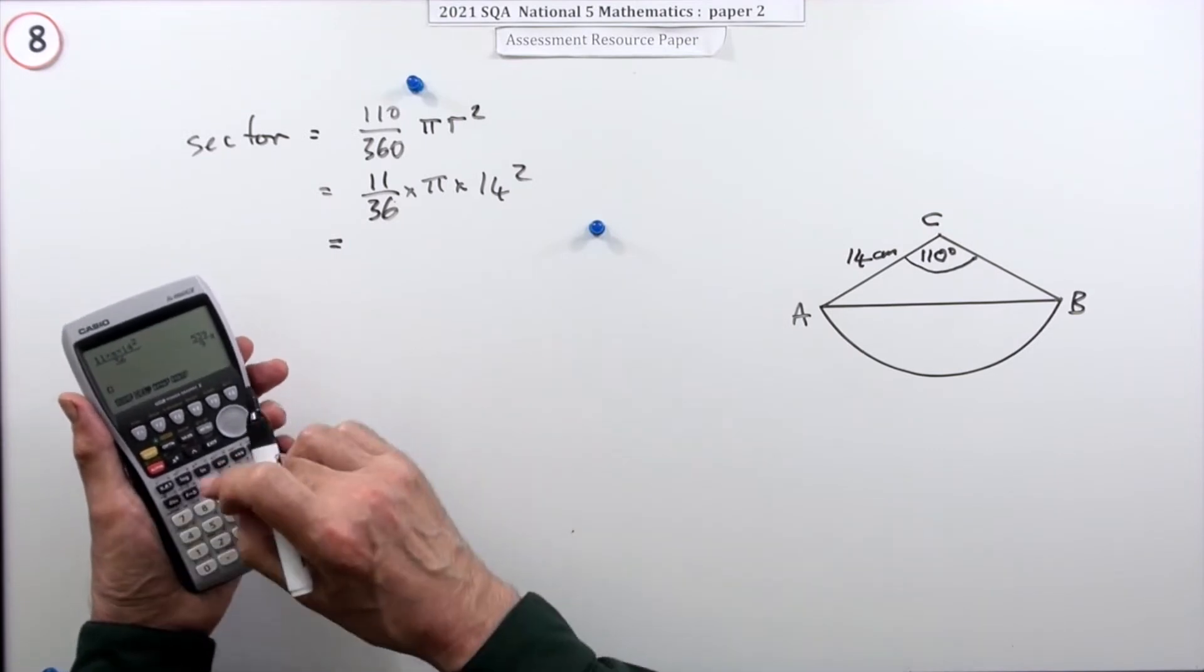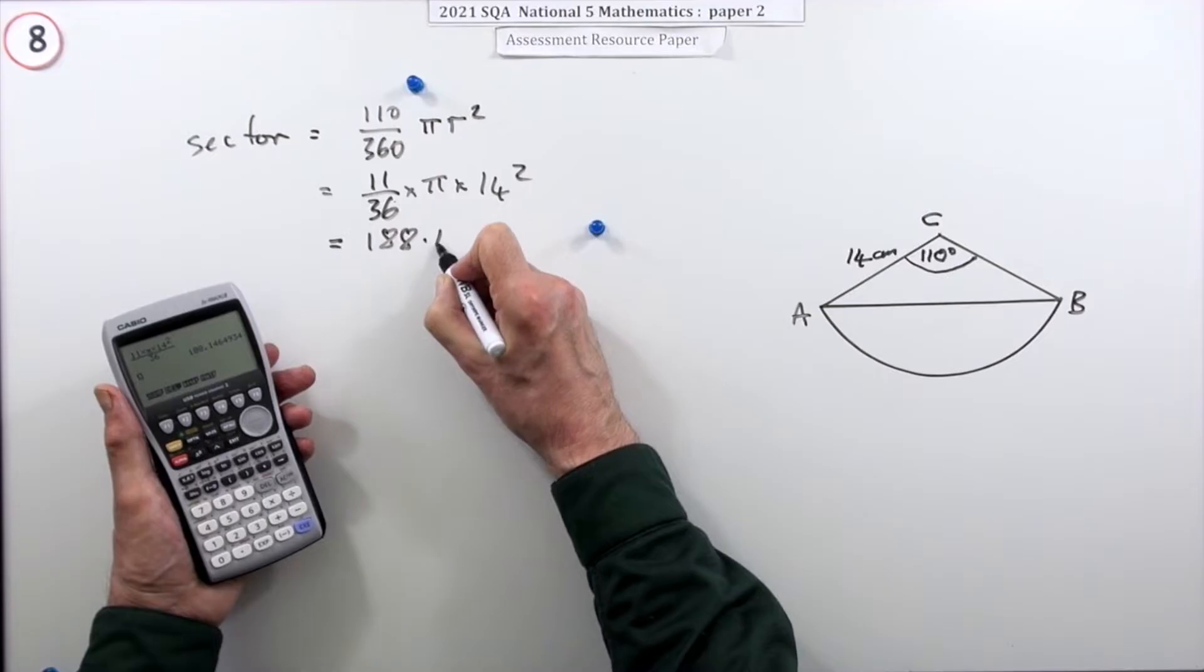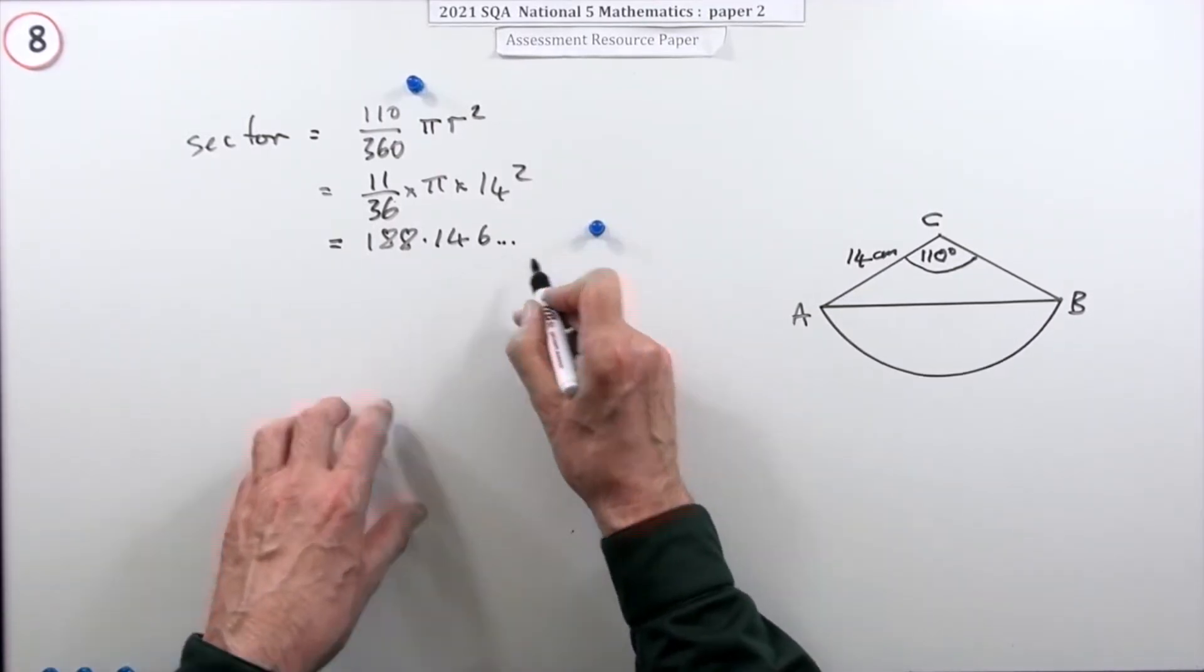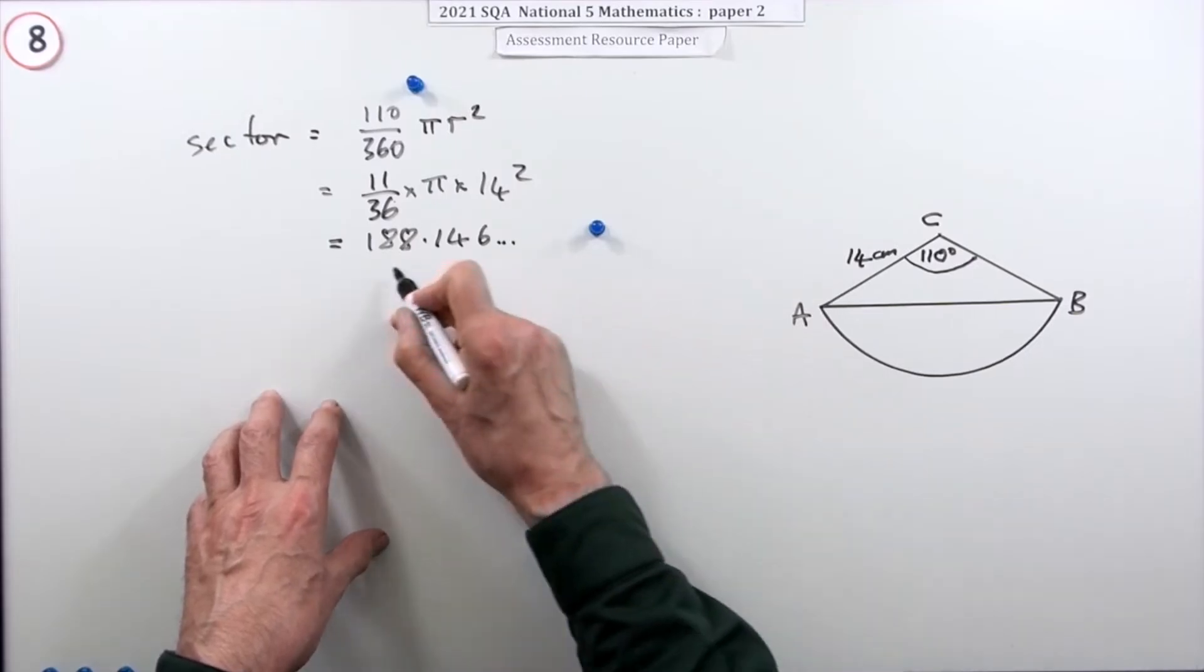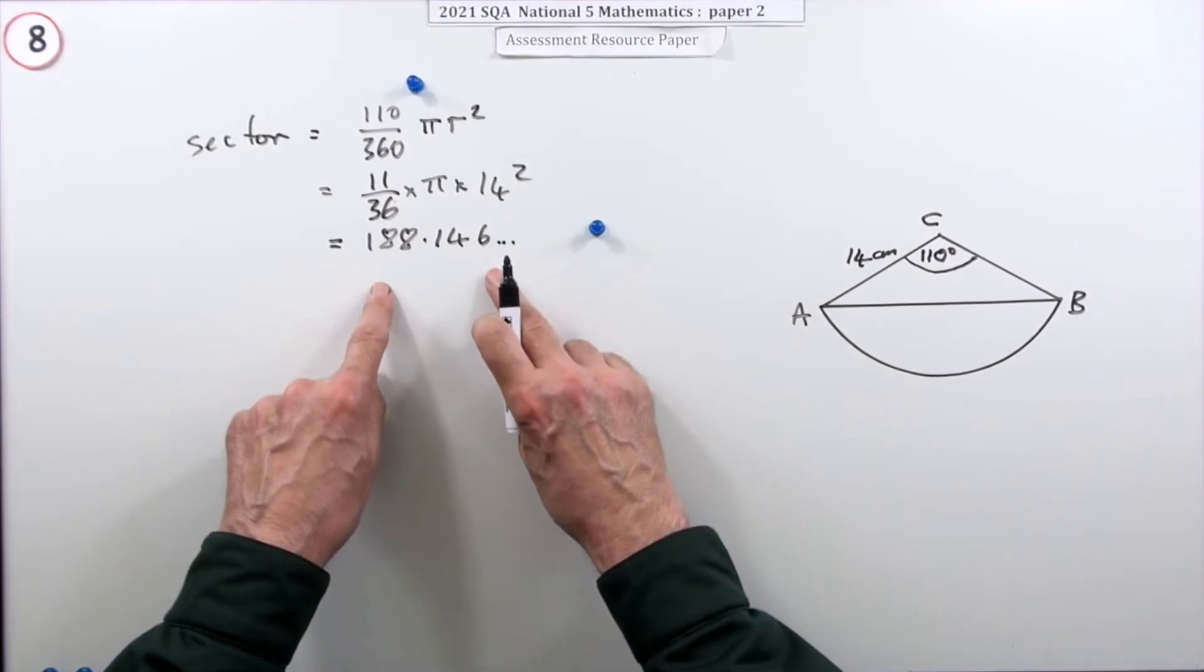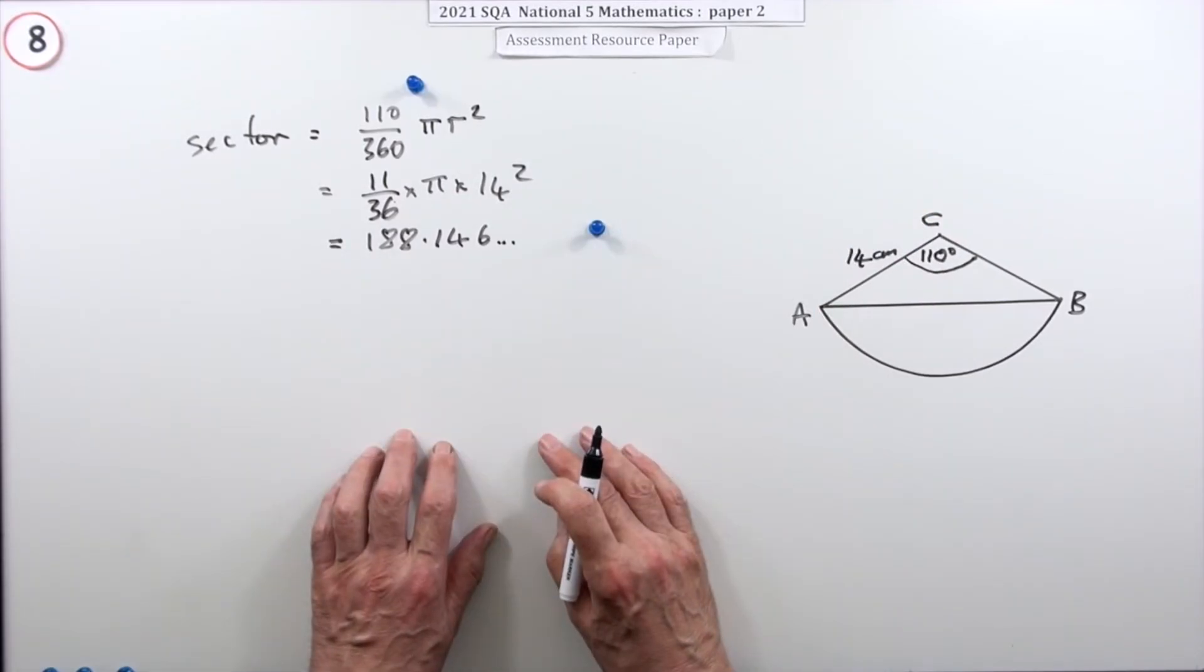Put that into your calculator - you have to go for the decimal - you get 188.146 and so on. The usual ellipses there telling you that's exactly what the calculator said, not been rounded off at all. That's stored in the calculator's answer memory.